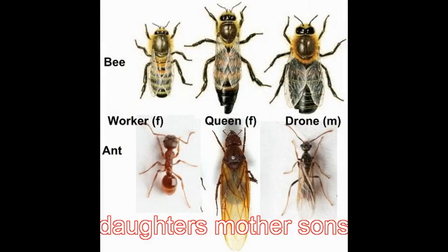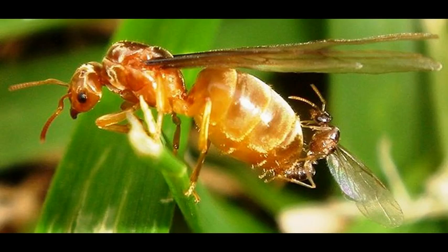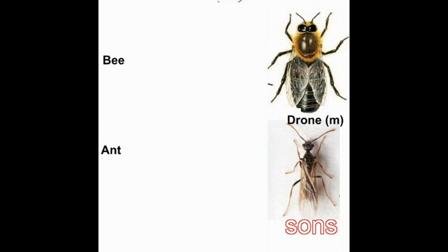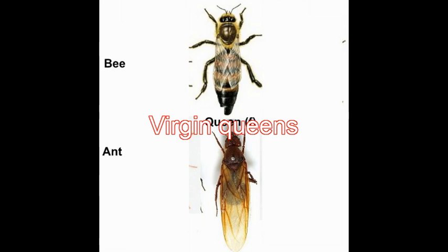The queen of the colony, like a mother of a family, lays her eggs. Using sperm she collected from her first and last mating, she selectively fertilizes or leaves unfertilized each of the eggs she lays. Unfertilized eggs develop into her sons — male drones who do nothing but eat and mate. Fertilized eggs become her daughters who, like Cinderellas, are destined to be workers with the possibility of one day becoming virgin queens, depending on the care they receive from the other workers.